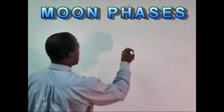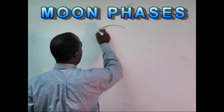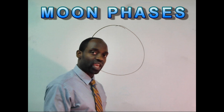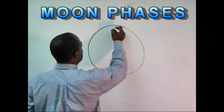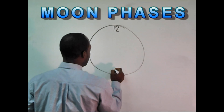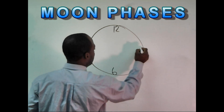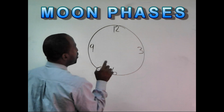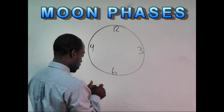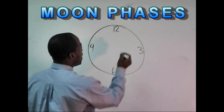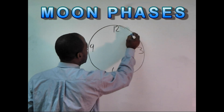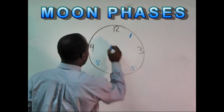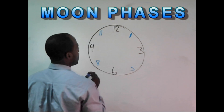First thing I want to do is draw a big circle — not the most perfect circle, but you understand it's a circle. I want you to put 12 at the top, 6 at the bottom, 3 on the right, and 9 on the left. Then we're going to add a couple more numbers: 1, 8, 5, and 11.